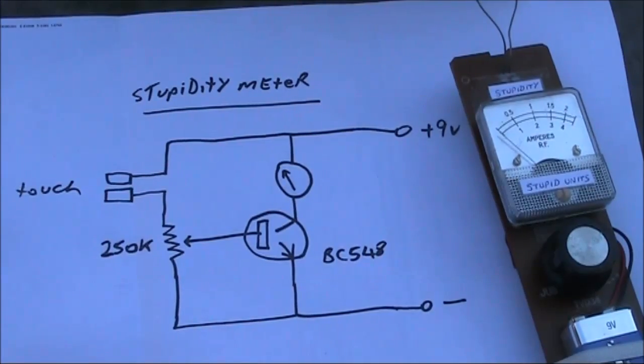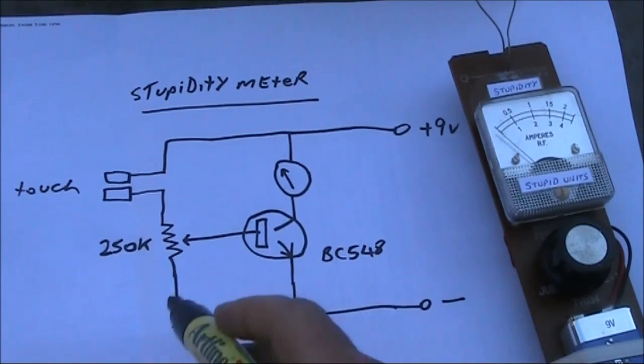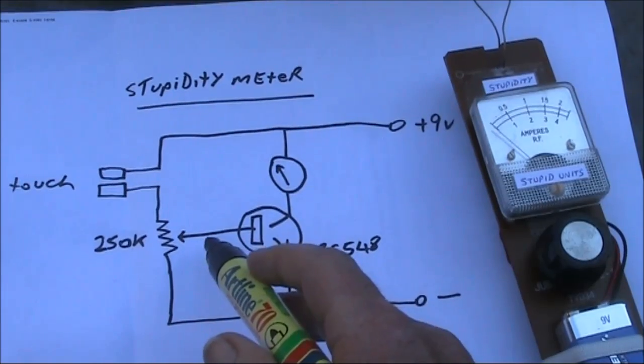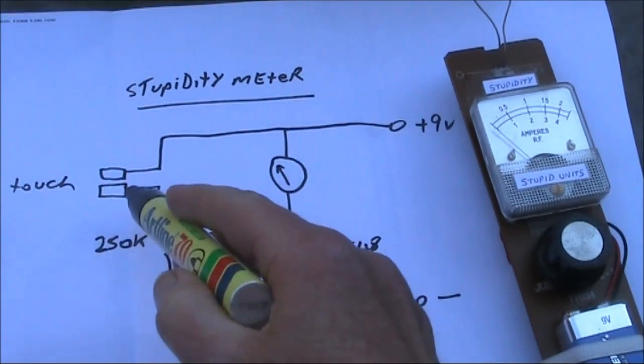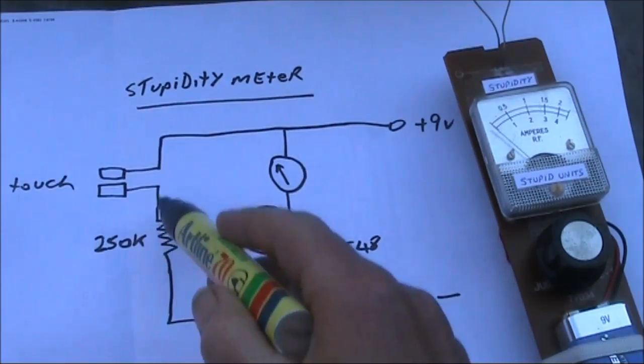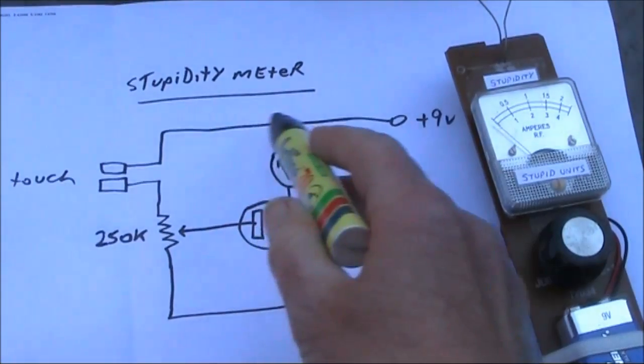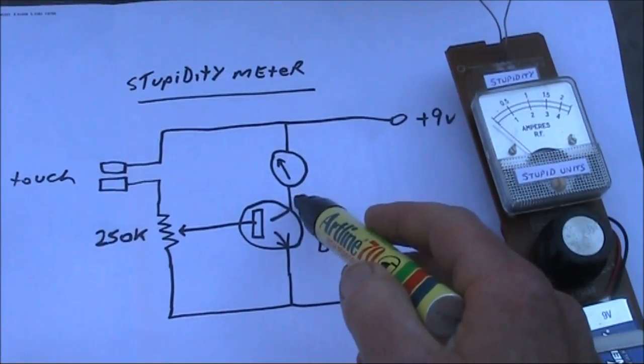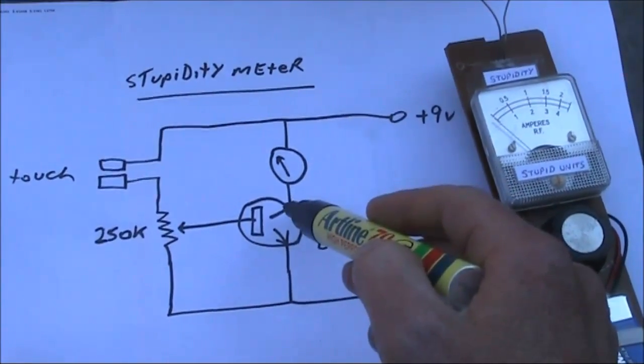Running through the circuit: the emitter of the NPN transistor goes to the negative lead of the battery and one side of the 250k potentiometer. The base goes to the center of the sensitivity potentiometer, and then the probes to the other end of the potentiometer—that's one probe, and the other to the positive rail. The meter connects between the 9-volt battery, the positive rail, and the collector of the transistor.